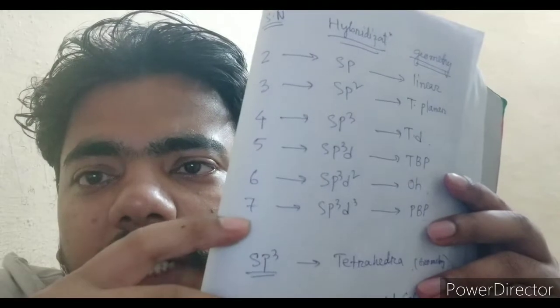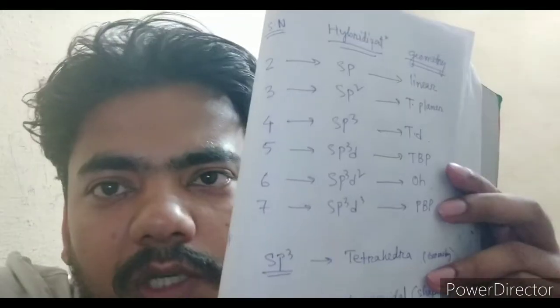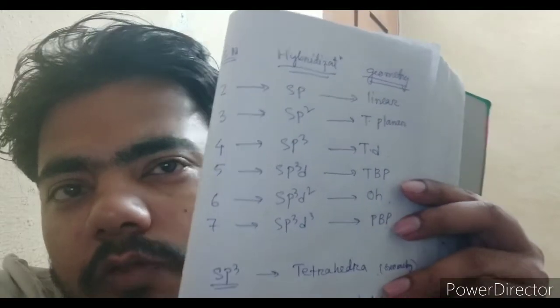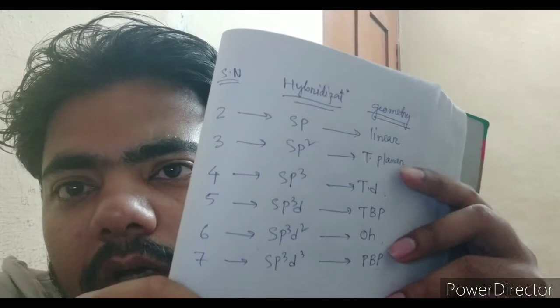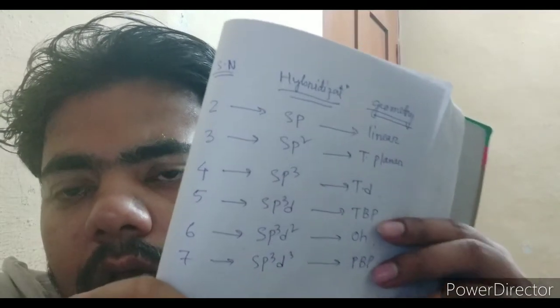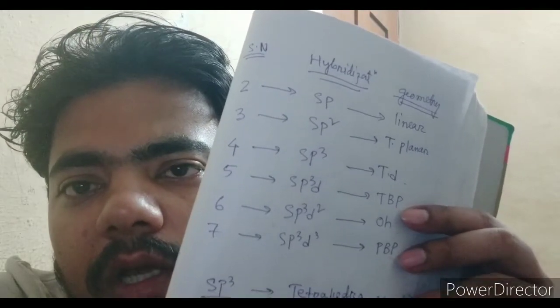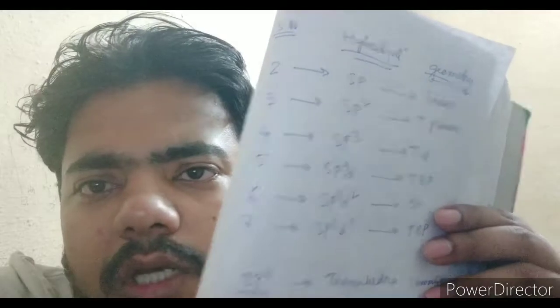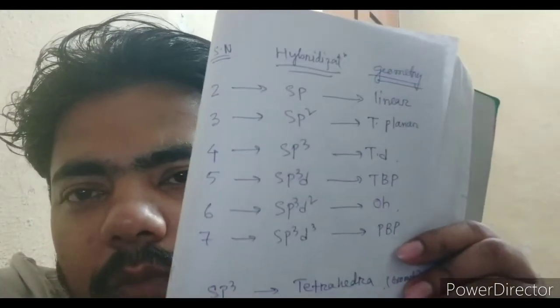When the steric number is six, that is sp3d2 hybridization — octahedral geometry. When the steric number is seven, that is sp3d3 hybridization and the geometry is pentagonal bipyramidal. For trigonal bipyramidal, an example is PCl5. For octahedral, SF6 is the example. For pentagonal bipyramidal, IF7 is one example. From these, a lot of questions may come.